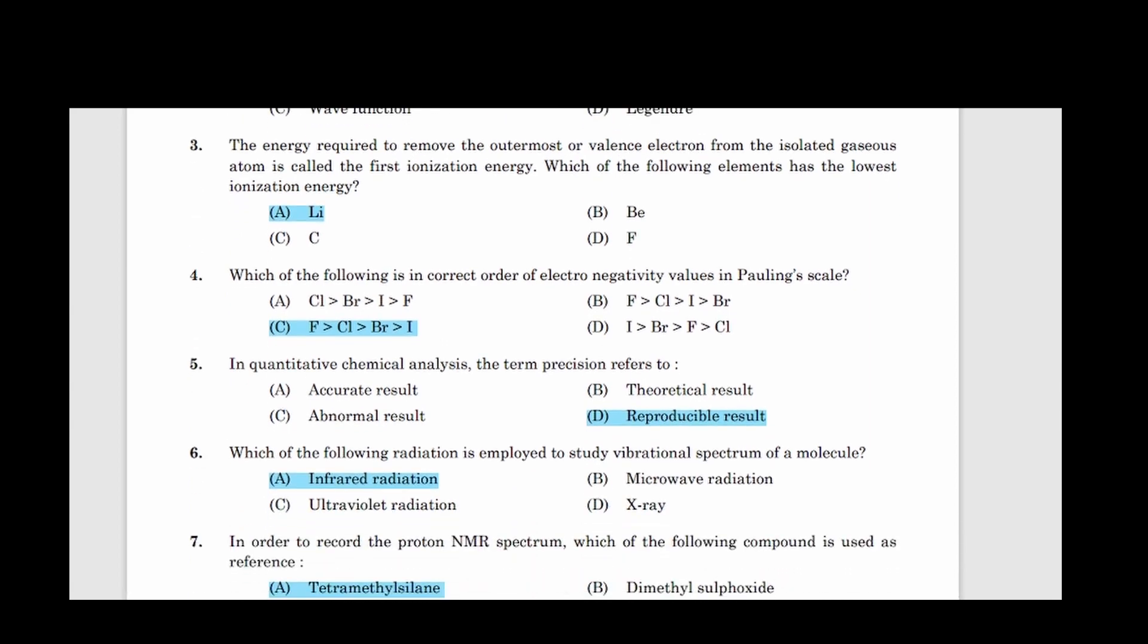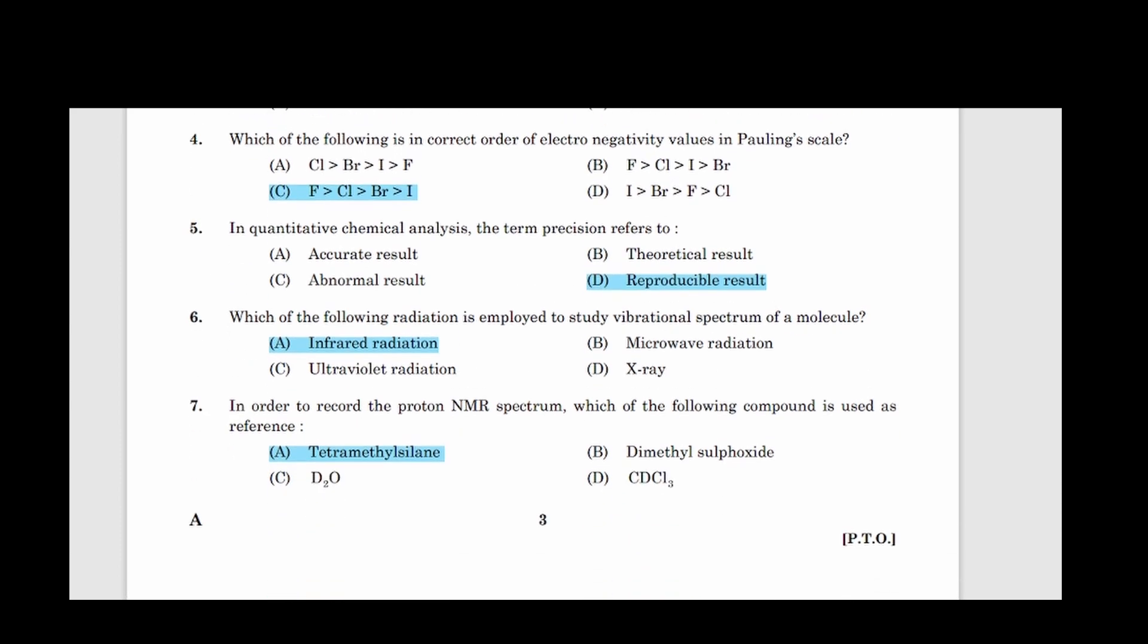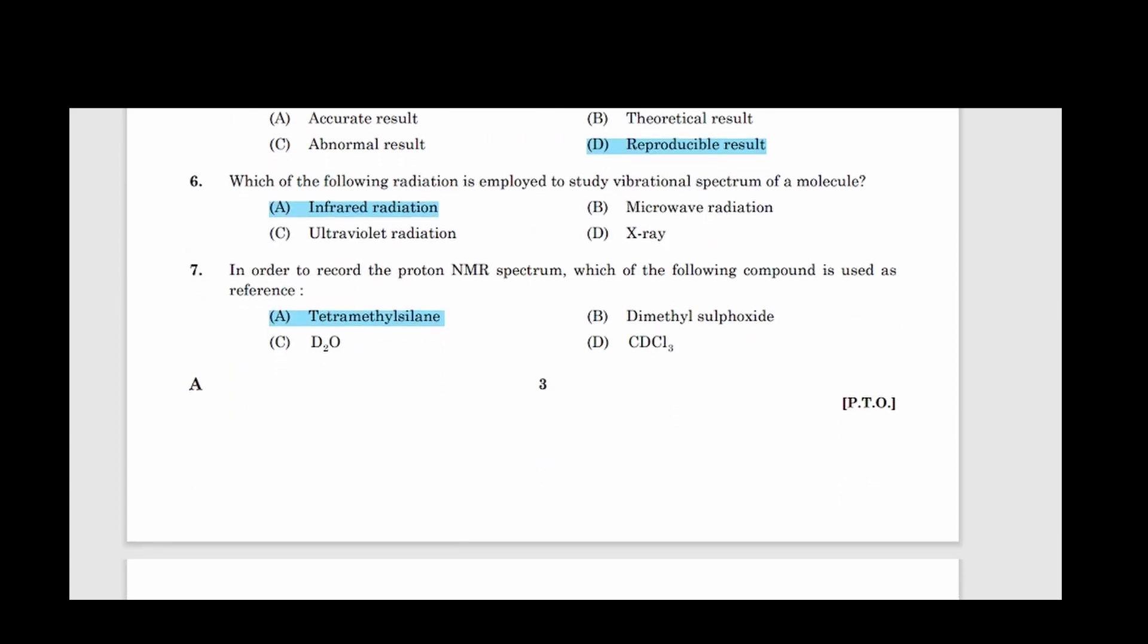Fifth question: In quantitative chemical analysis, the term precision refers to. Correct answer option D, Reproducible result. Sixth question: Which of the following radiation is employed to study vibrational spectrum of a molecule? Correct answer option A, Infrared radiation. Seventh question: In order to record the proton NMR spectrum, which of the following compound is used as reference? Correct answer option A, Tetramethylsilane.